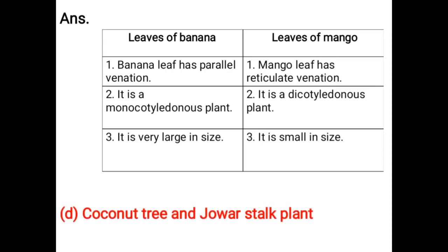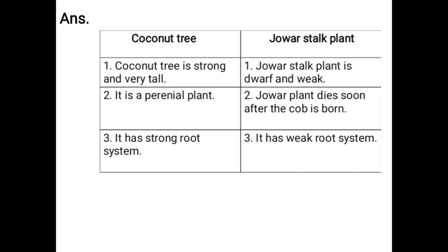Coconut tree and Jowar stock plant: Coconut tree is strong and very tall; Jowar stock plant is dwarf and weak. Coconut tree is a perennial plant. Jowar plant dies soon after the cob is formed. Coconut tree has a strong root system, while Jowar stock plant has a weak root system.